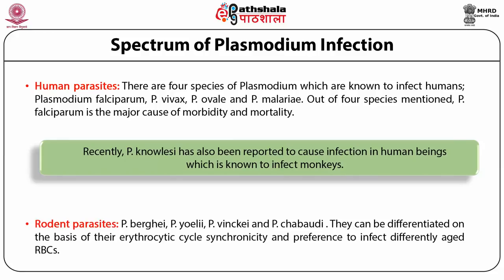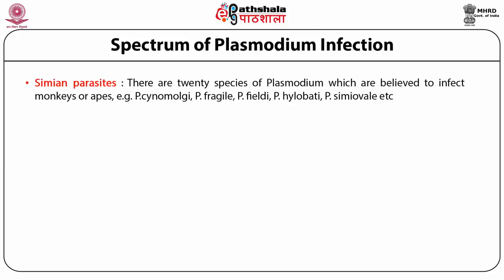Rodent parasites: four species are well known to infect rodents, which can be differentiated on the basis of the erythrocytic cycle, synchronicity, and preference to infect differentially aged RBCs — for example, Plasmodium yoelii and Plasmodium berghei. Simian parasites: there are 20 species of Plasmodium believed to infect monkeys and apes with a range of biological characteristics similar to human parasites — for example, Plasmodium fragile and Plasmodium hylobati.